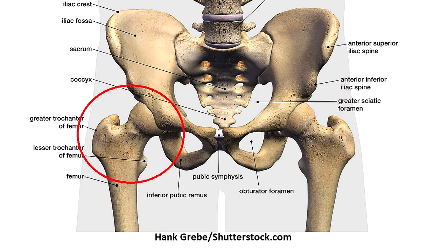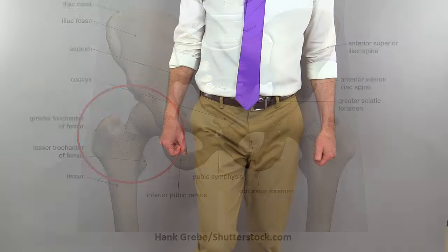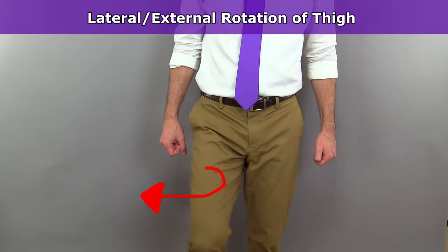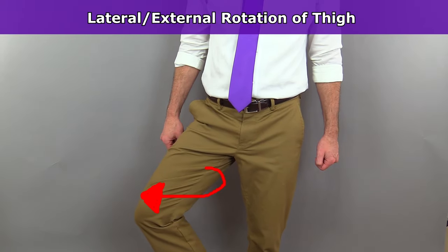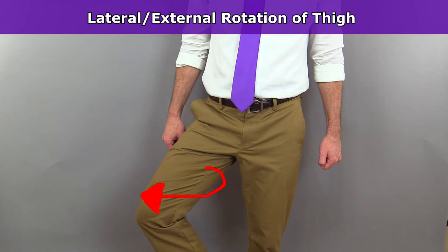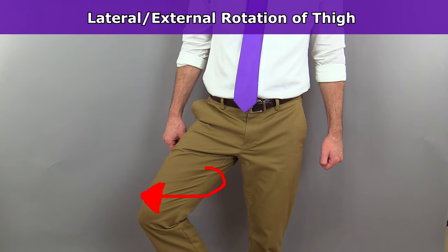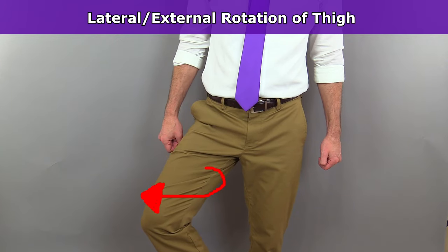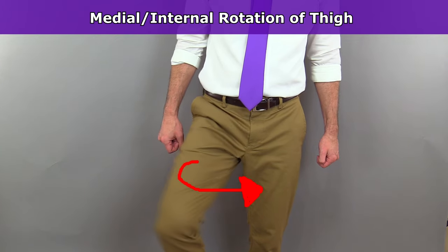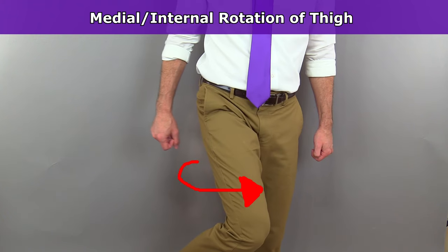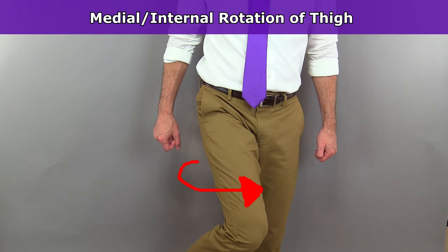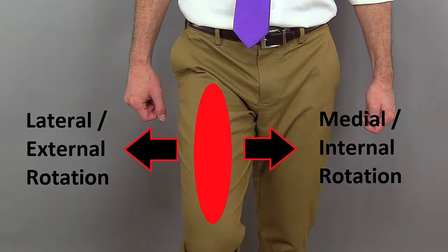The ball and socket joint of the hip allows rotation of the thigh's femur. And just like with the humerus, it can rotate laterally or away from the body's midline, which is also called external rotation. And it can also rotate medially or toward the body's midline, creating an internal rotational movement.